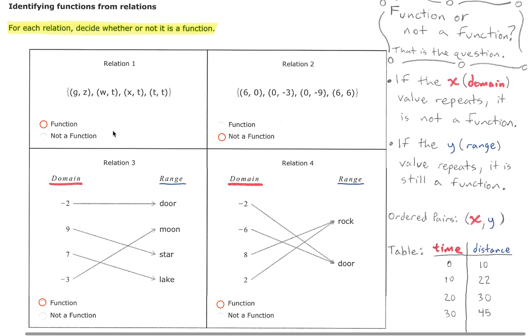In our third and fourth relation we are looking at a mapping. In our mapping we first have to look at the domain values. The domain values are negative 2, 9, 7, and negative 3.